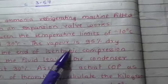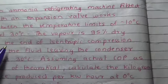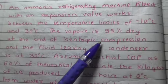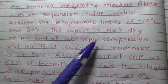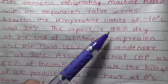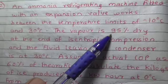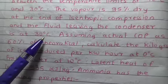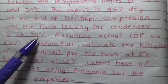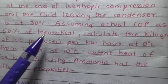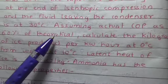Vapor is 95% dry at the end of isentropic compression, so we can write that after compression, X2 equals 0.95. The fluid leaving the condenser is at 30 degrees Celsius. Actual COP is 60% of theoretical, so once we calculate theoretical COP, actual COP will be 60% of theoretical.